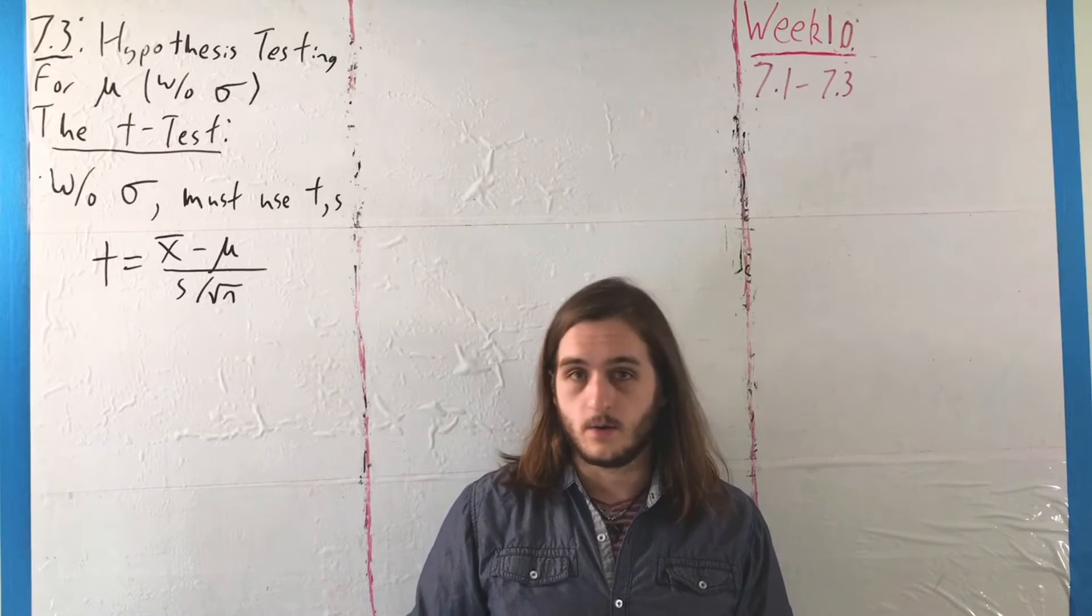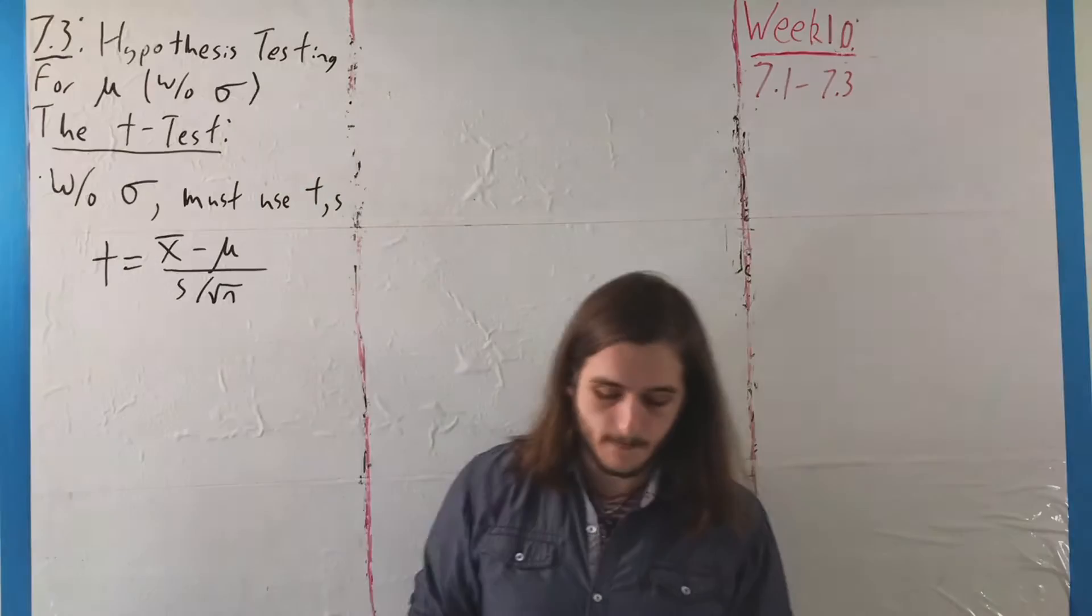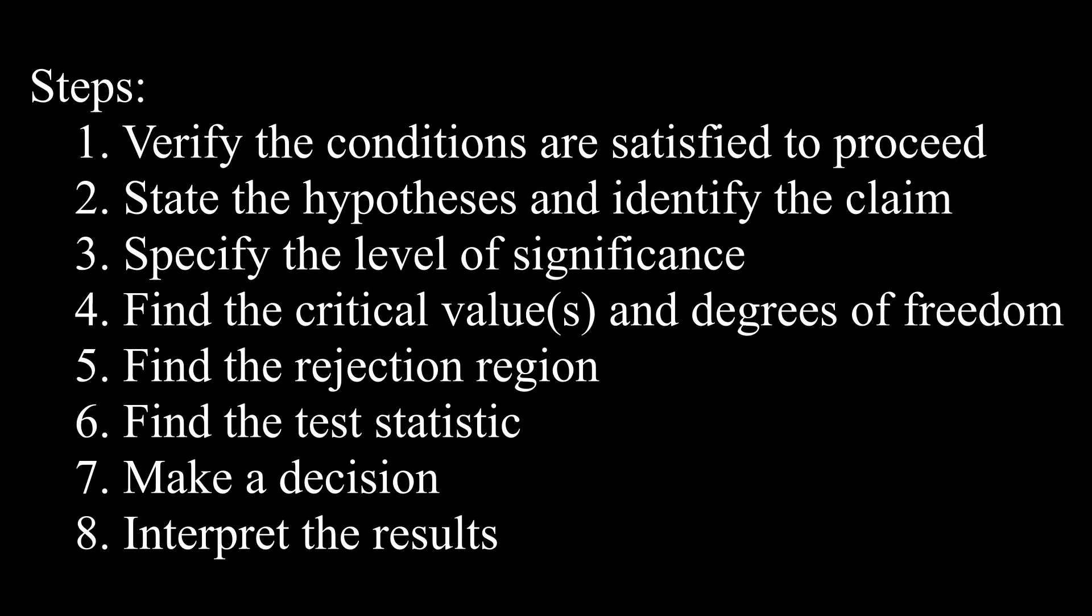Here we have our basic steps wherein we check our conditions, make sure that those are satisfied, they almost always are. Then we state our hypotheses and claim, find the level of significance, then our degrees of freedom and critical values, then use those to define our rejection region or regions for that matter, find our test statistic to compare them to, make our decision, and then interpret what we're working with.